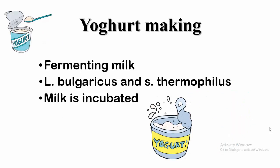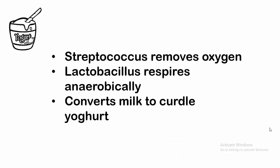First is yogurt making. Milk is fermented using certain bacteria like Lactobacillus bulgaricus and Streptococcus thermophilus. Milk is then incubated with bacteria. Streptococcus removes oxygen, thereby creating an anaerobic condition.